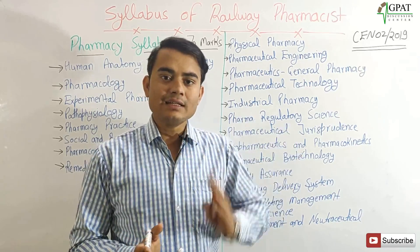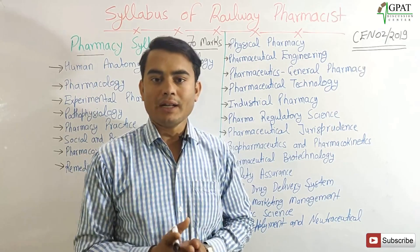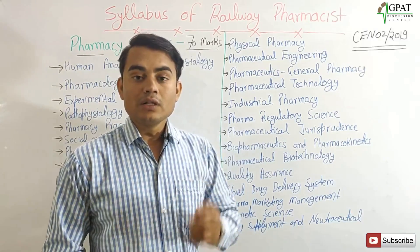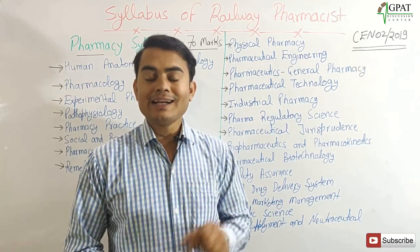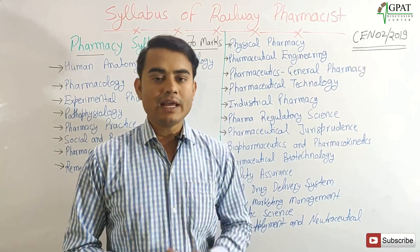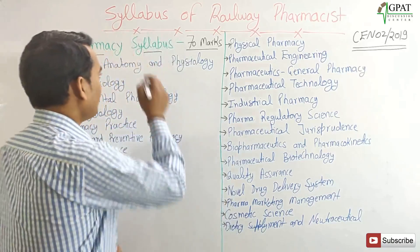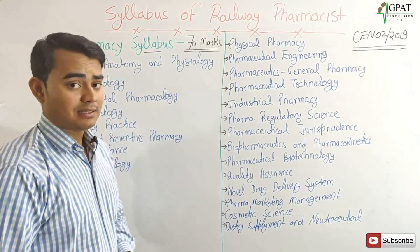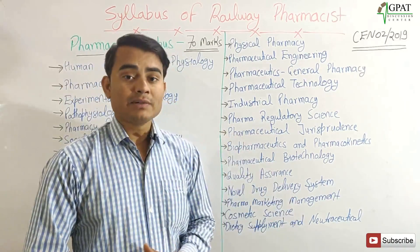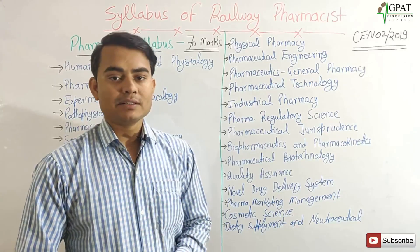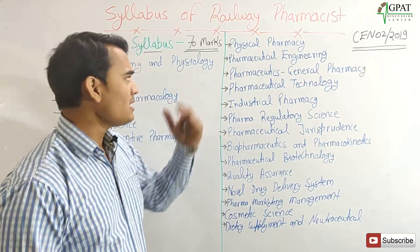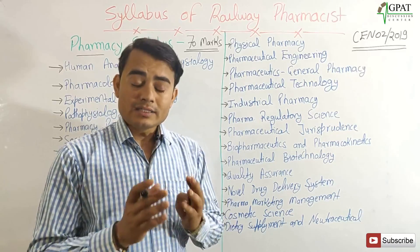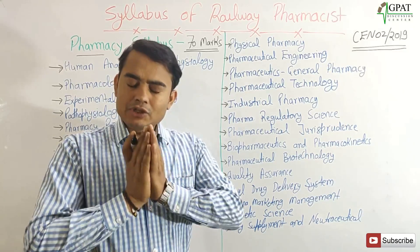The total syllabus is divided into two parts. The first part is the Technical Subject and the second part is the Non-Technical Subject. Under the Technical subjects, a total of 70 questions will be there, each carrying one mark, meaning the total pharmacy syllabus will cover 70 marks, and the non-pharma syllabus will cover 30 marks.